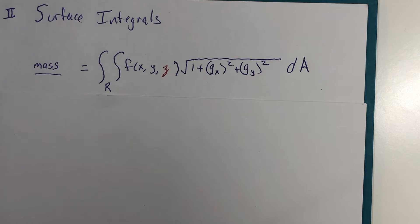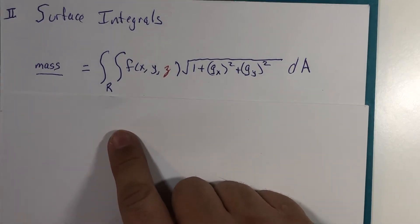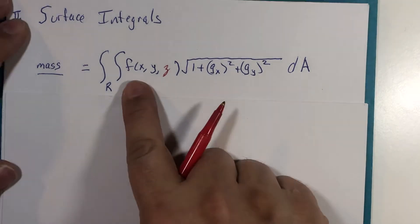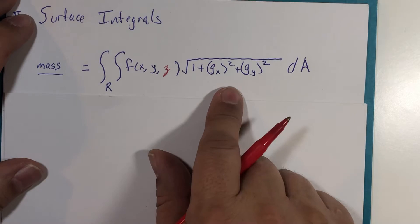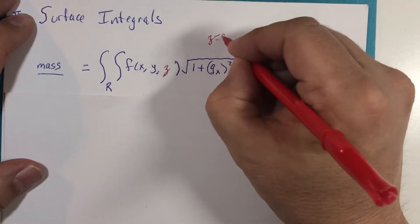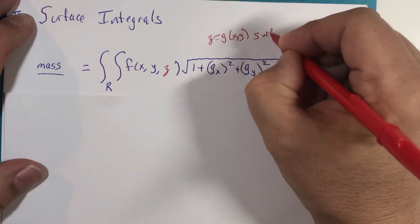So surface integral is the formula in question, and you've already seen and done some calculations where you might be finding the mass of a surface. And so this is actually our density function, and the g of xy referred to here, z equals g of xy, was the surface in question.